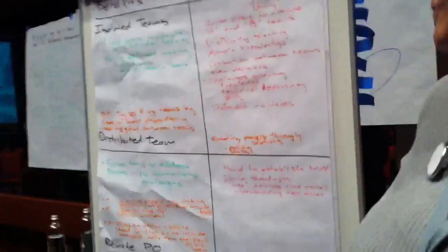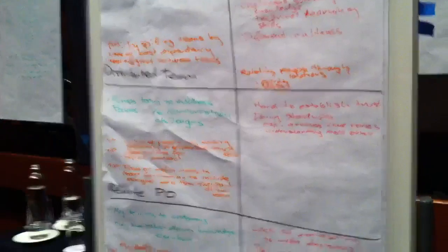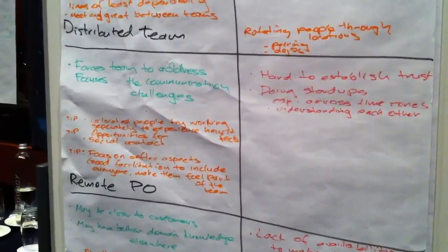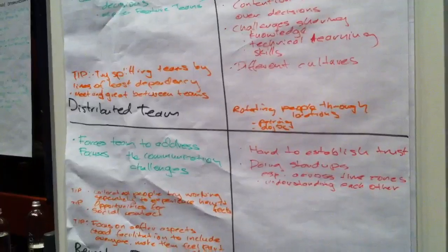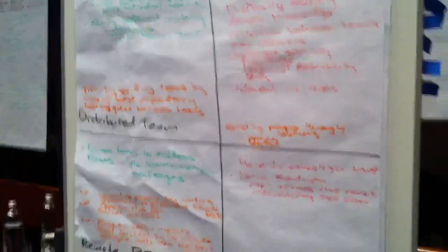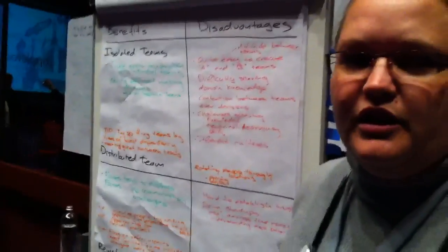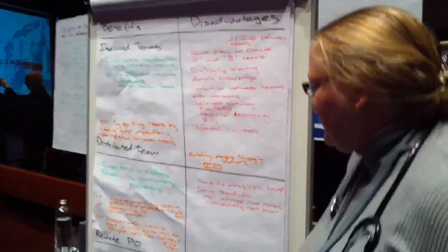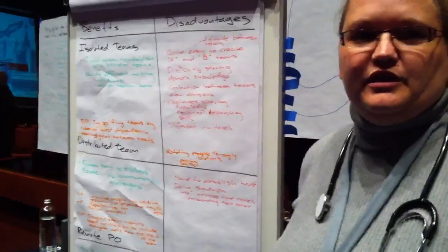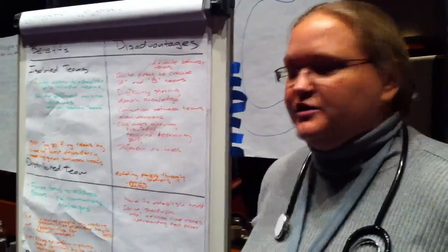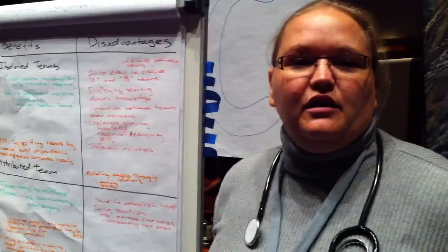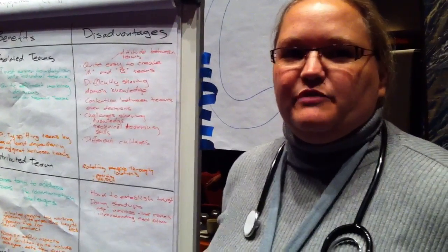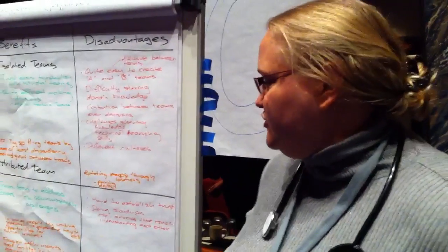For the distributed team, one of the benefits is that it forces the teams to actually communicate because they're working on the same team and they need to coordinate on a daily basis. So even though communication is hard, they do have to do it every day. One of the difficulties with distributed teams is establishing trust. Some of the ideas around that are to actually get together face to face initially before you start the project to build that trust.